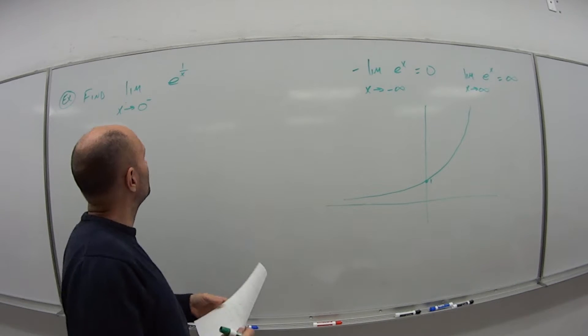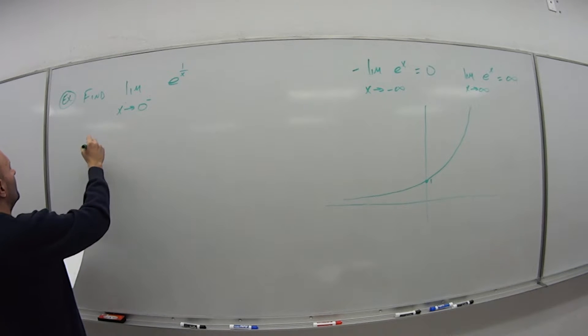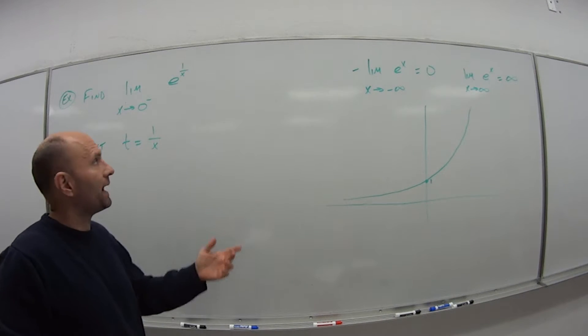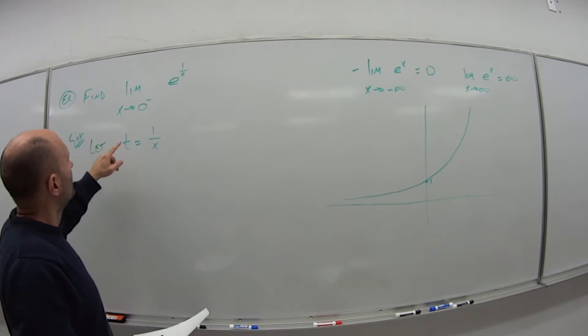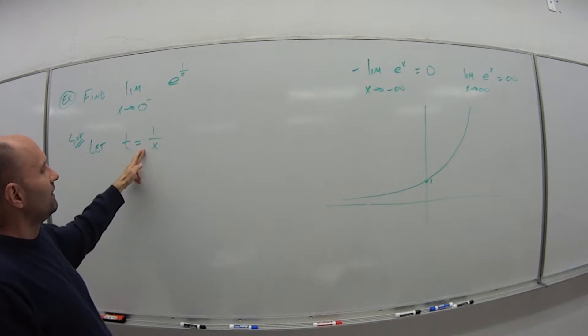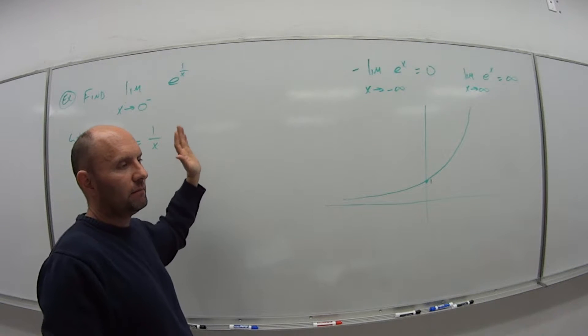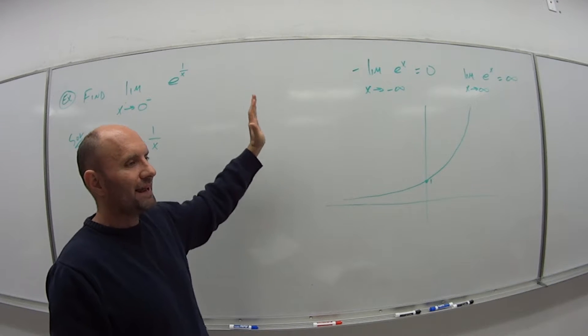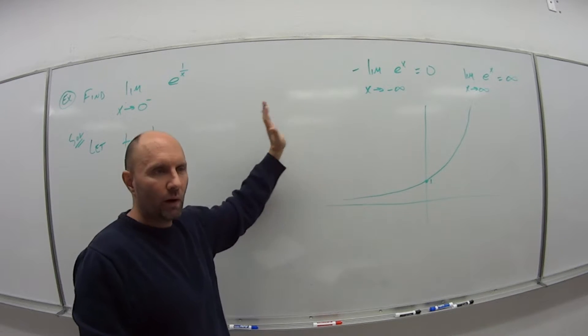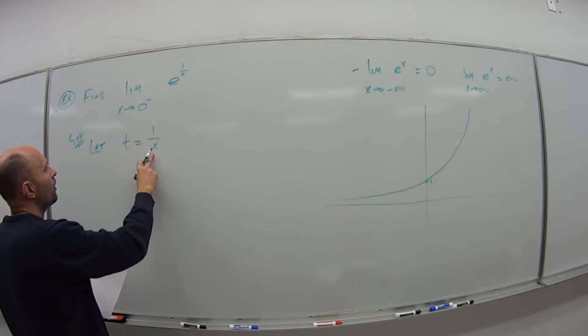I'm going to do some substitution here. For my solution, let's let some variable t equal this 1 over x. As x goes to 0 from the left side, it's negative 10, negative 5, negative 1, negative half, negative 0.1, negative 0.001. It's getting closer and closer to 0, but this is always going to be a negative number.